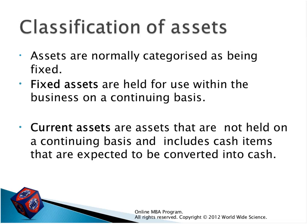Assets have two types: fixed assets and current assets. Fixed assets are used in the business on an ongoing basis — buildings, property, equipment — which we can use for more than one year. Current assets are those used within one year only, and include cash items expected to be converted into cash, like cash on hand or cash in the bank — or any resources that could be converted into cash very quickly.